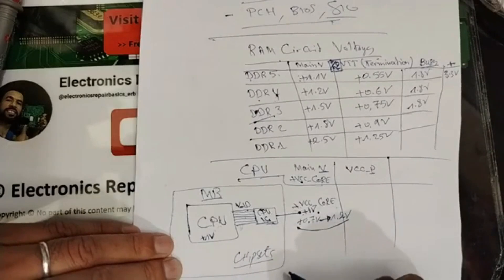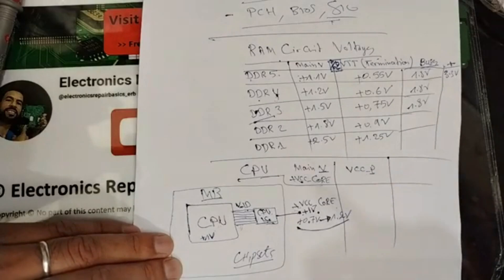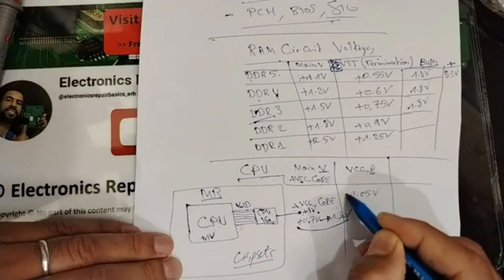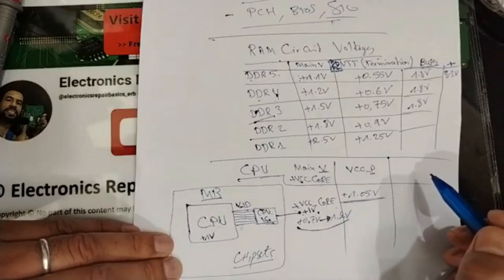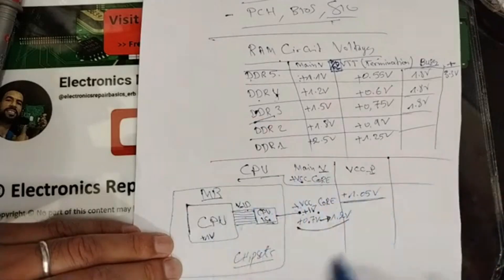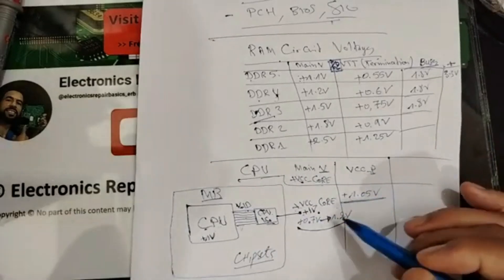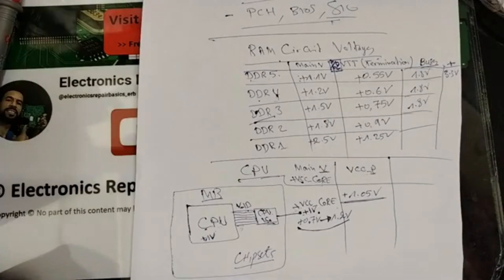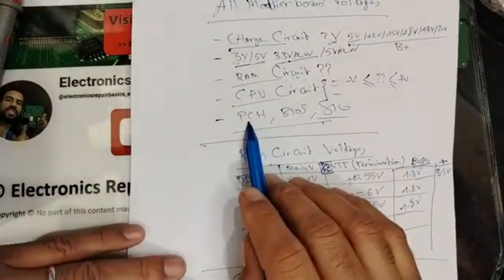The VCCP voltage is used for the CPU, PCH, south bridge, and north bridge or chipsets. This voltage is stable at +1.05V. Without VCCP, no communication occurs between the CPU and PCH or other chipsets.